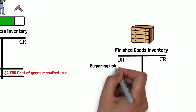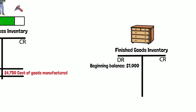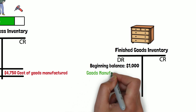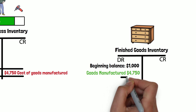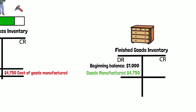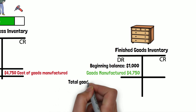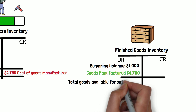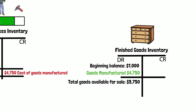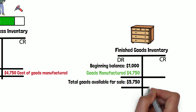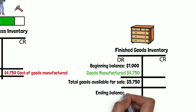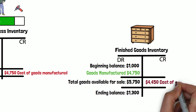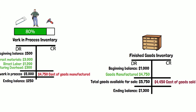Now let's take a look at the finished goods inventory. Suppose the beginning balance is $1,000, and we know that the cost of goods manufactured is $4,750. So the total goods available for sale would be the sum of those two numbers, which gives us $5,750. Assume the ending balance of the finished goods inventory is $1,300, so the cost of goods sold is $4,450.